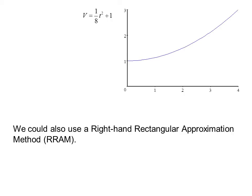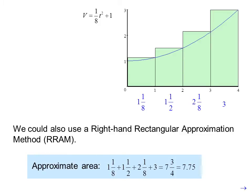We could also use a Right Hand Rectangular Approximation Method, or RRAM. We draw new rectangles, touching at the right-hand corner. And we notice that the heights are different, but we could approximate the area by adding up the rectangles. The approximate area is 1 and 1/8, plus 1 and 1/2, plus 2 and 1/8, plus 3, which is 7 and 3/4, or as a decimal, 7.75.